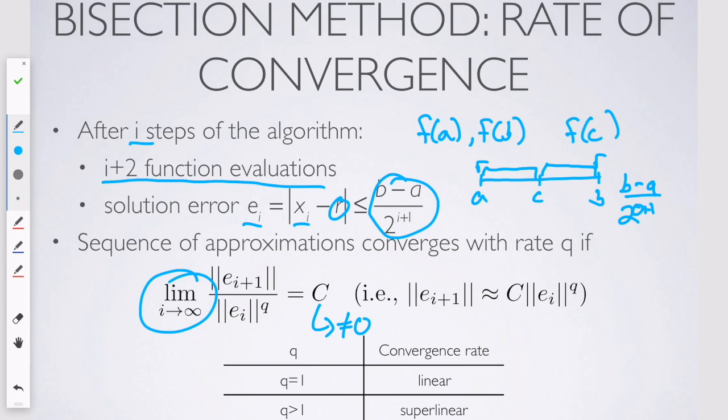Then what that means is that the convergence rate is equal to q. We have special vocabulary for certain cases. If q happens to equal one, we say linear convergence. If q is greater than one, it's called super linear. And if q equals two, it's called quadratic.